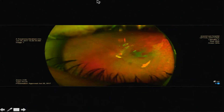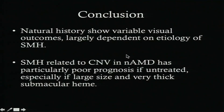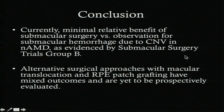This patient surprisingly achieved the best visual outcome — improving to 6/18. In conclusion, the natural history of subretinal or submacular bleed is quite variable. When related to neovascular AMD it carries a very poor prognosis, and frankly there is minimal benefit of submacular surgery in that setting. However, with submacular bleed — especially in PCV — early intervention can give better results, and this is one indication where the technique of submacular surgery is being revived.